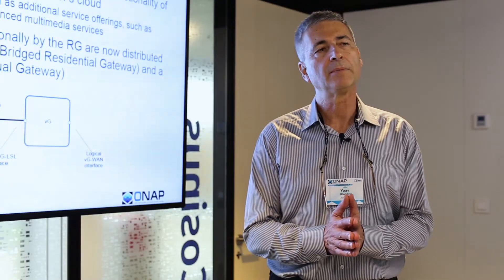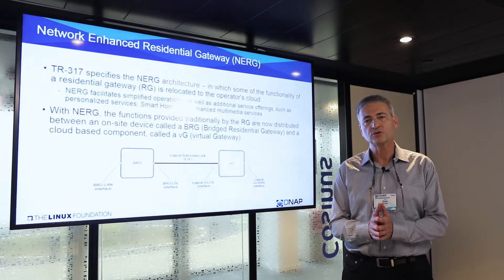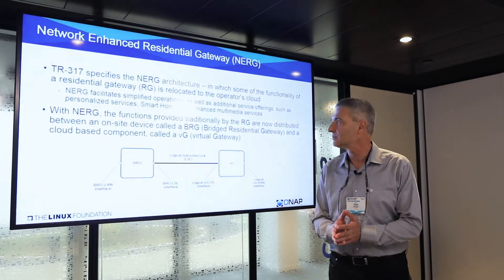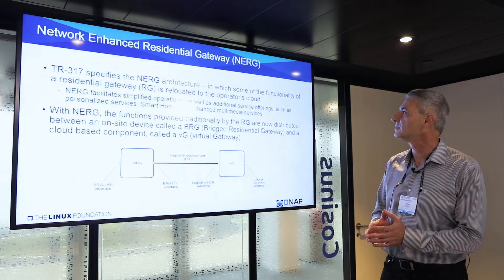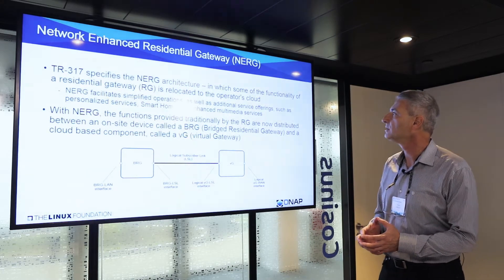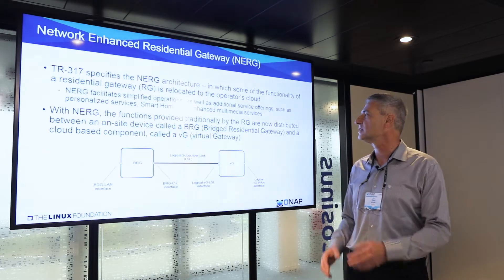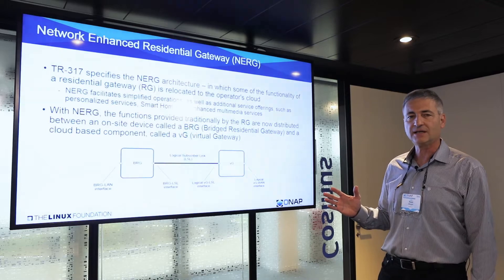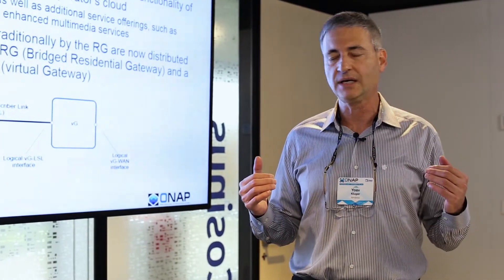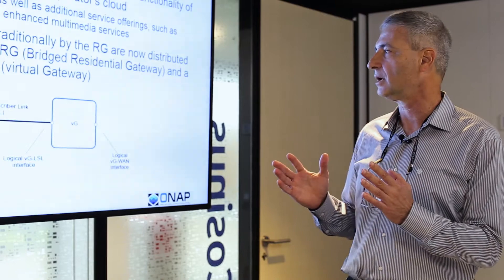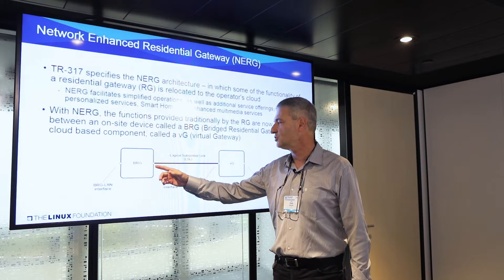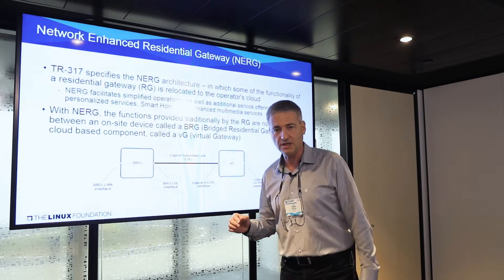The Broadband Forum came up with a relatively new specification — came out last year — called TR-317, and what it does is it defines a new architecture called NERG, Network Enhanced Residential Gateway, which really separates the functionality of the traditional residential gateway into two parts. One part is the BRG, which is now called Bridged Residential Gateway.